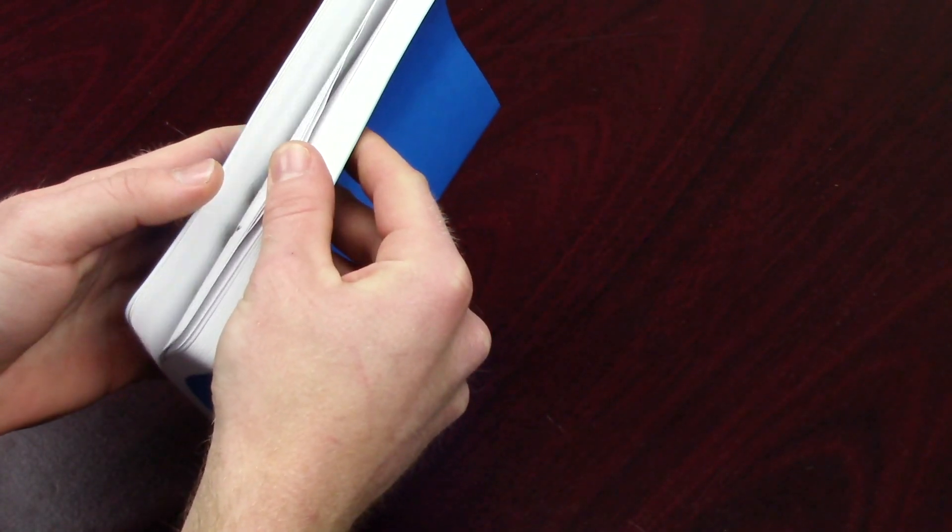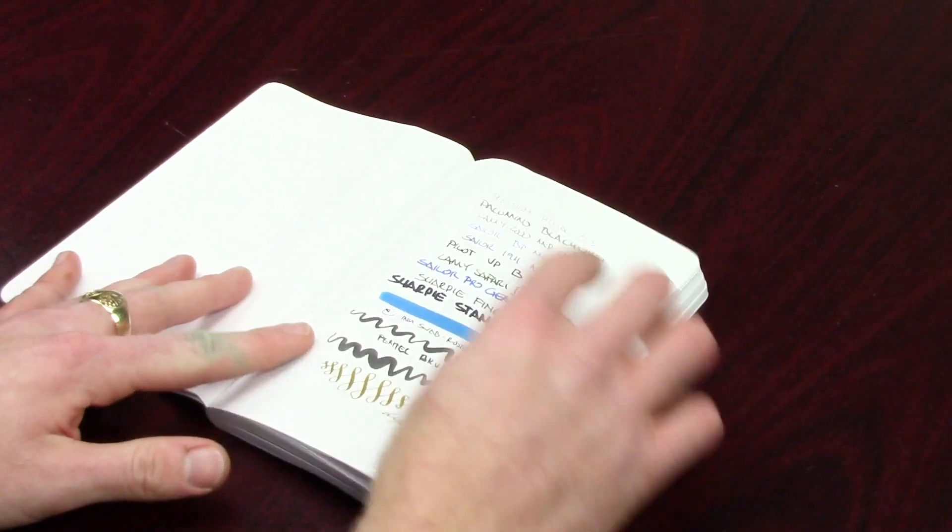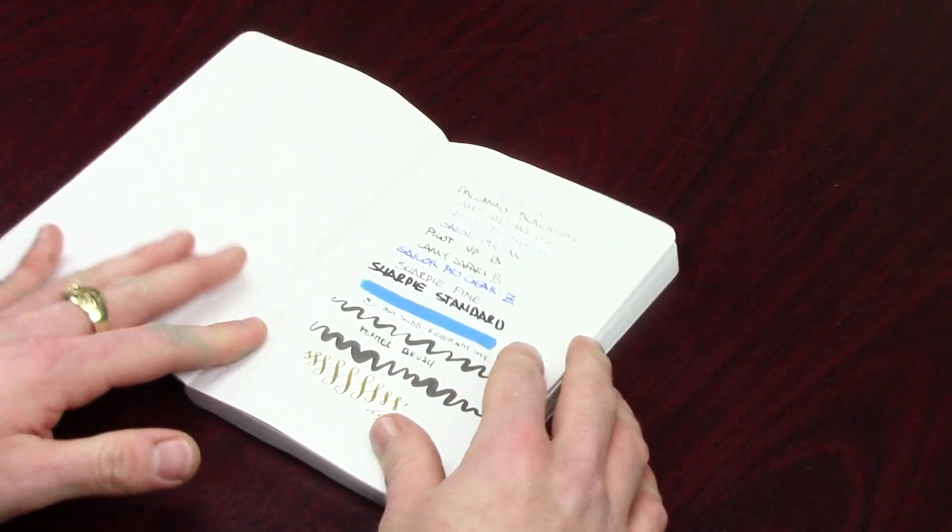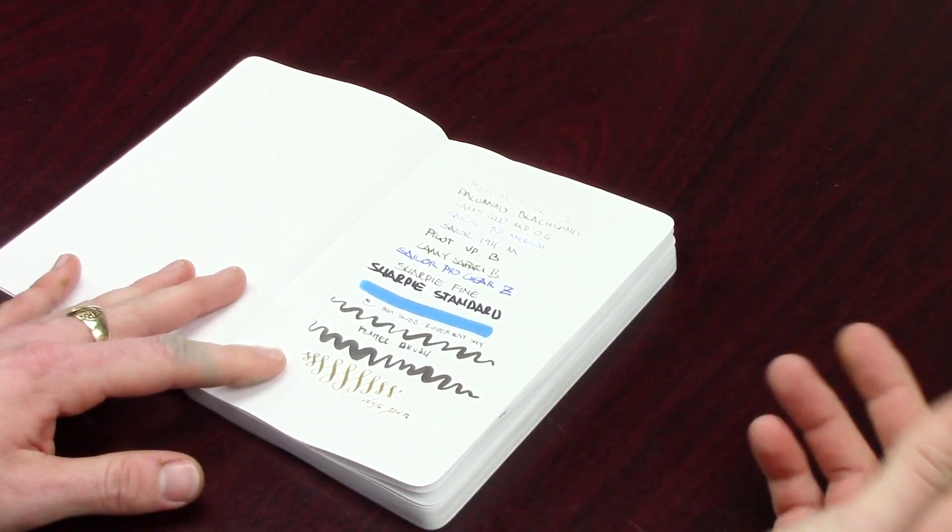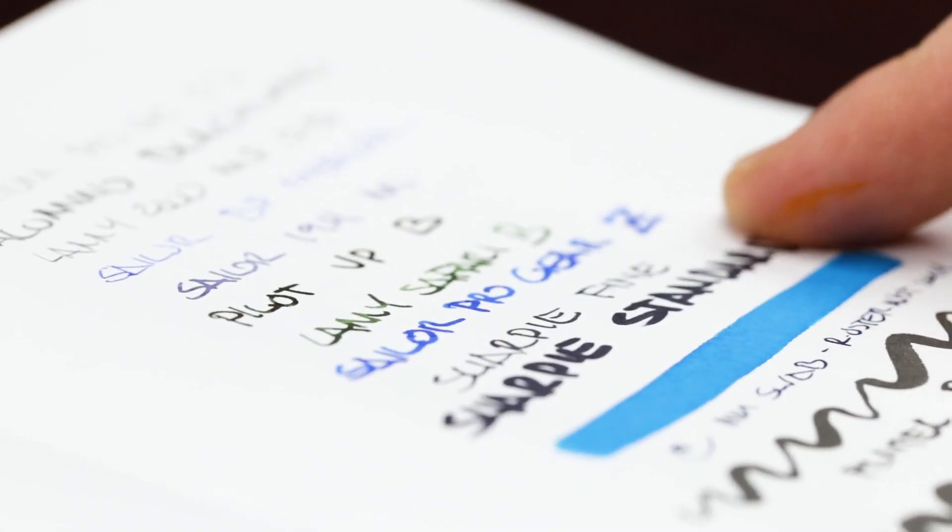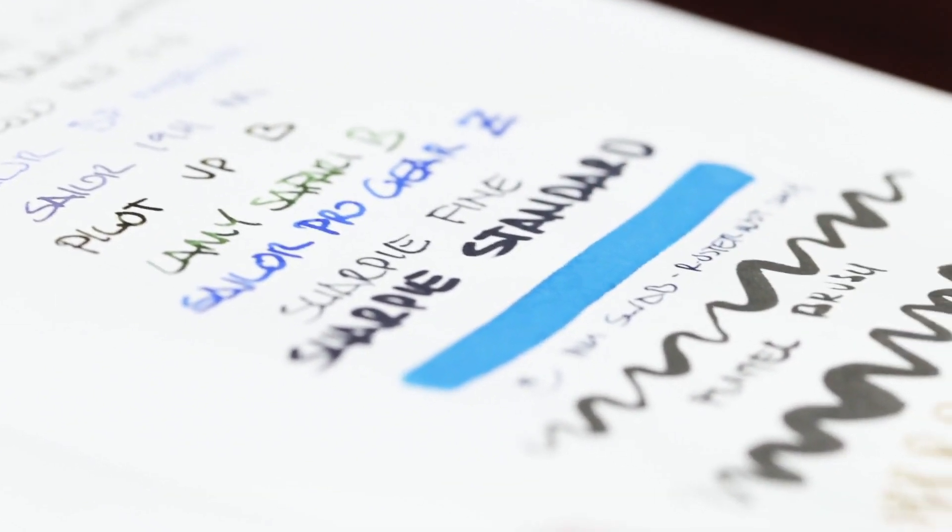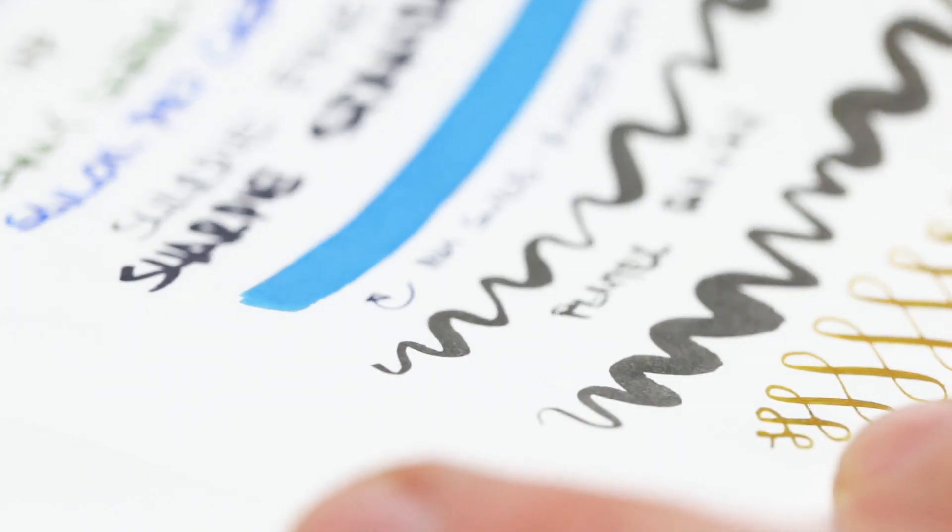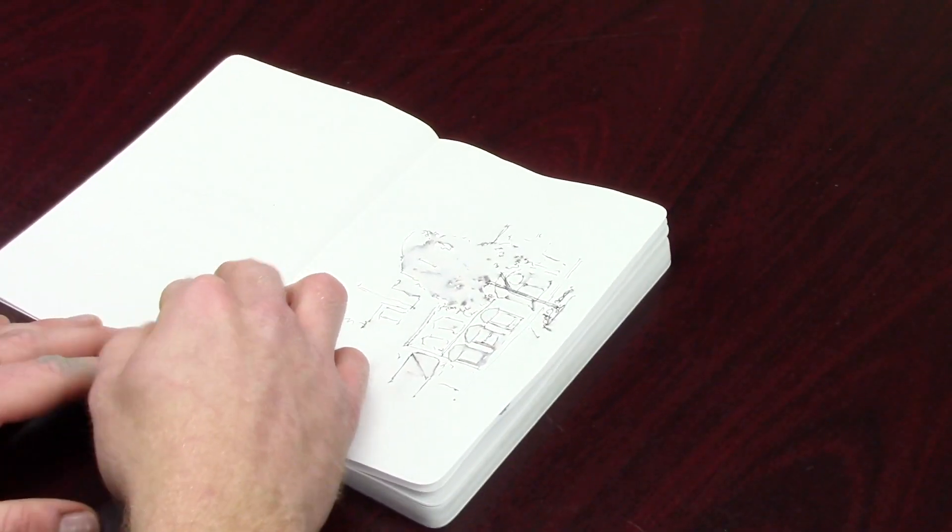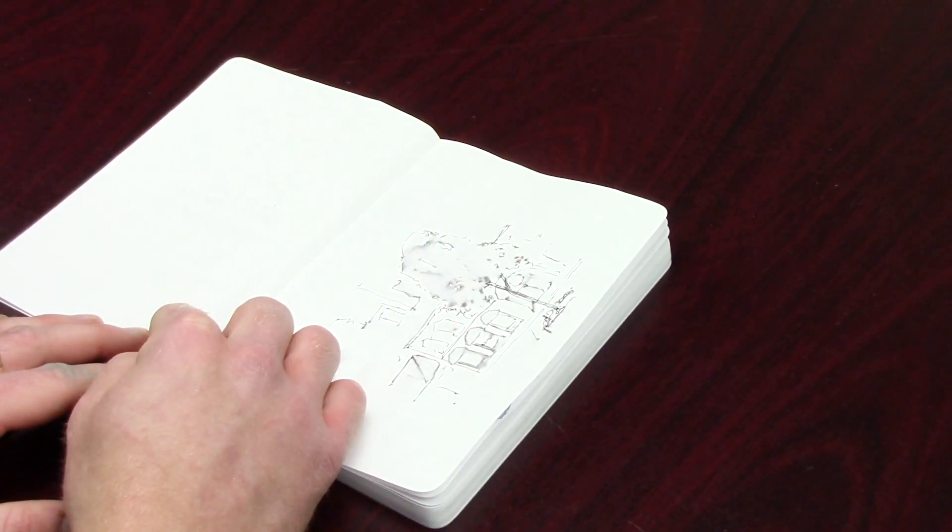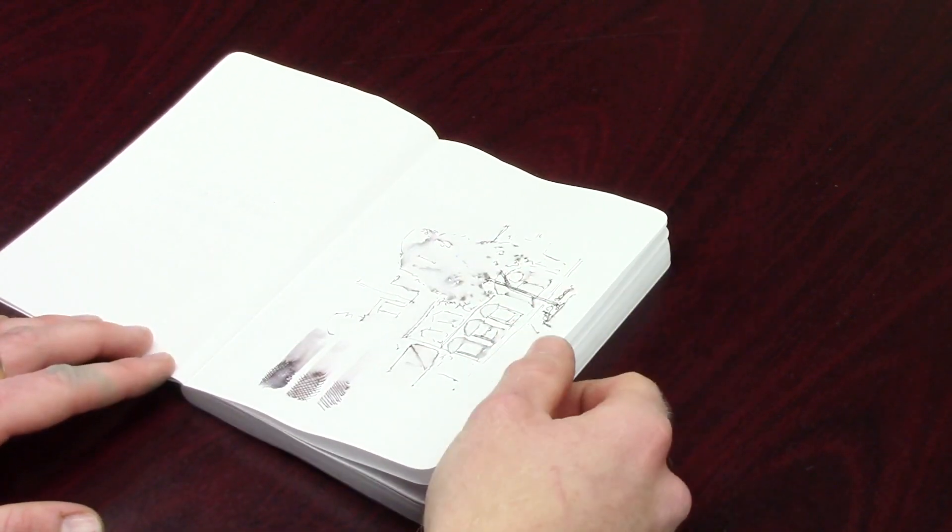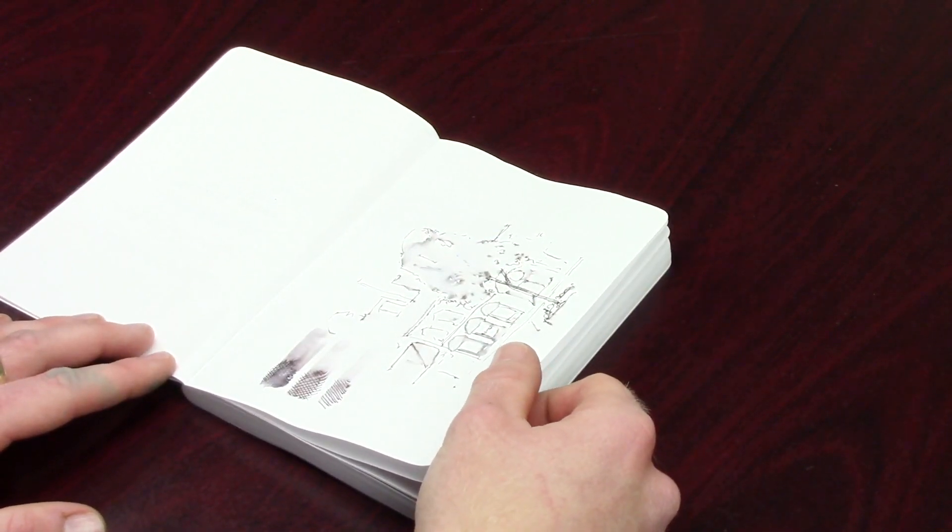Now as for the paper, it is 100 gram paper which is fairly heavy, but it accepted any writing instrument very well. As you can see we got pencil, some fountain pens, a Sailor Pro Gear Zoom which is quite broad, had no problem with that. Some brush pens and dip pens. As you can see there was no bleed through except with the Sharpies which is kind of expected.